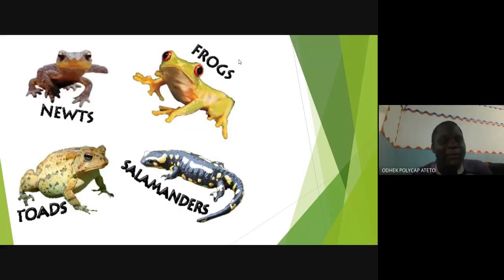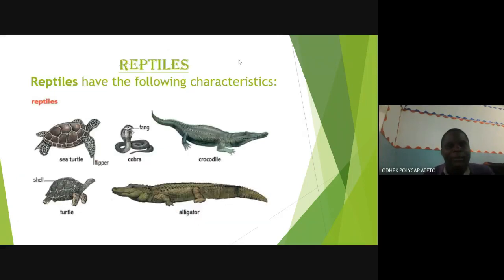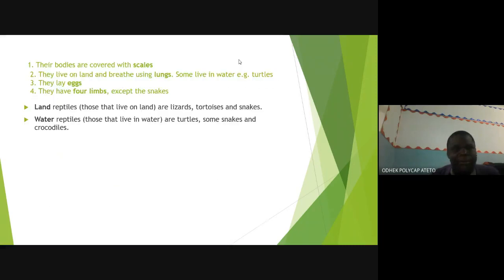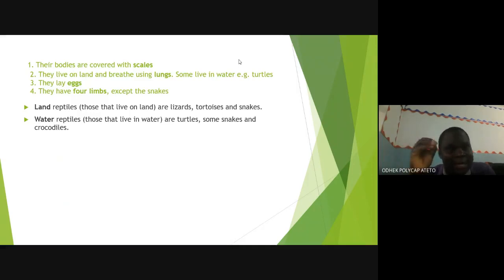Examples of amphibians: we have frogs, newts, salamanders, and toads. The last cold-blooded group is reptiles. Examples of reptiles include tortoises, alligators, crocodiles, and snakes. Characteristic number one: their bodies are covered with scales. They live on land and breathe using lungs. Some live in water, for example turtles.